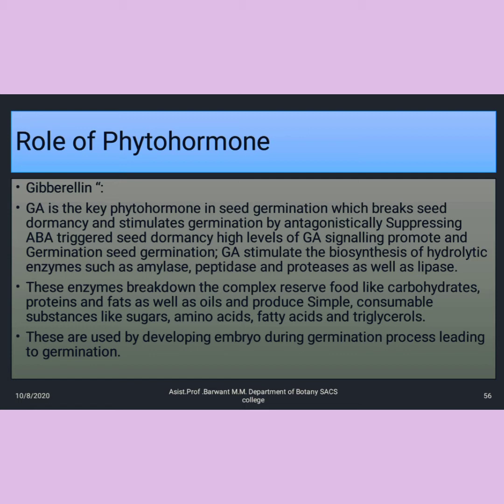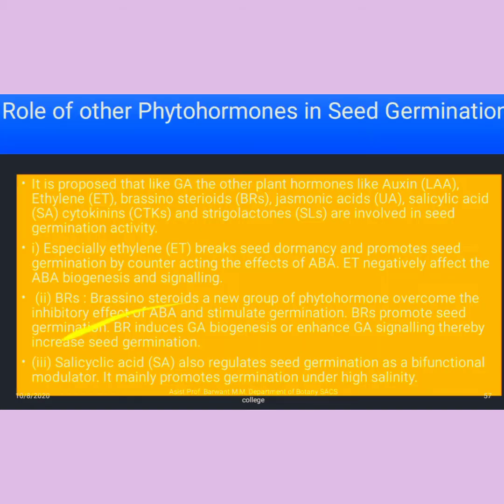GA stimulates the biosynthesis of hydrolytic enzymes such as amylase, peptidases, protease, and lipase. These enzymes break down complex reserve food materials like proteins, carbohydrates, and fats, and produce simple consumable substances like sugars, amino acids, fatty acids, and triglycerides. These are used by the developing embryo during the germination process.